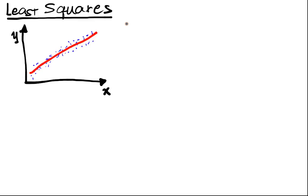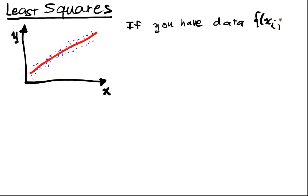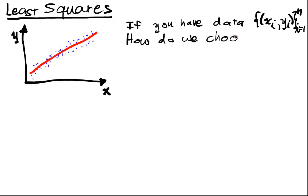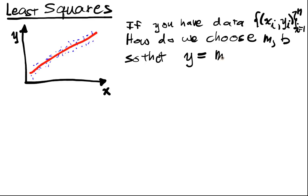Least squares basically allows us to do that. If you have a set of data points (Xi, Yi) — so these are the values you're given — and you have N many points of data, how do we choose M and B? We want to optimize M and B so that the graph Y equals MX plus B is a good fit for the data.